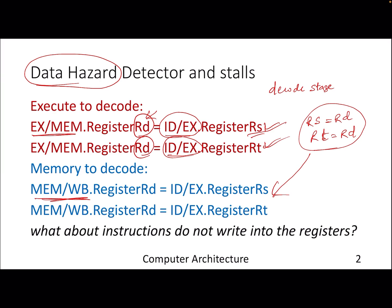There are more subtle issues — for example, instructions that don't write into registers but write into memory. You have to take the help of control signals on top of these latches. This will be a pen-and-paper assignment where you go through the logic of a hazard detector in a typical five-stage pipeline, so we won't go into detail of this particular circuit at the moment.